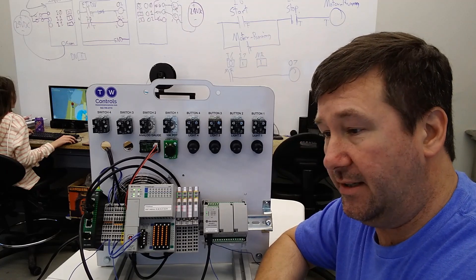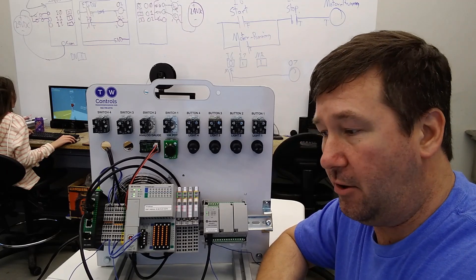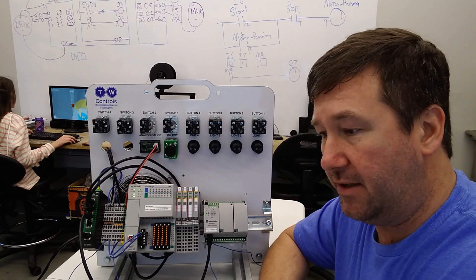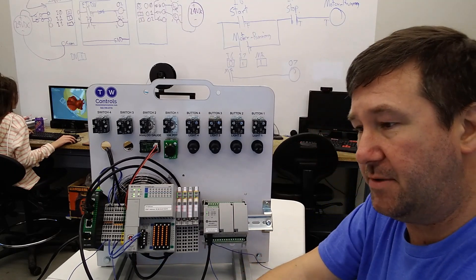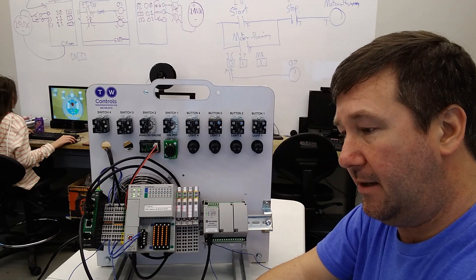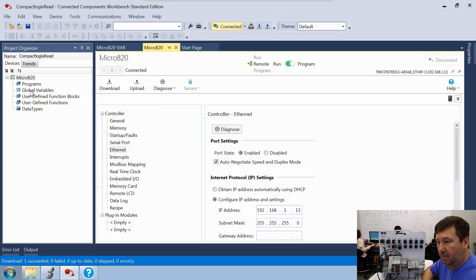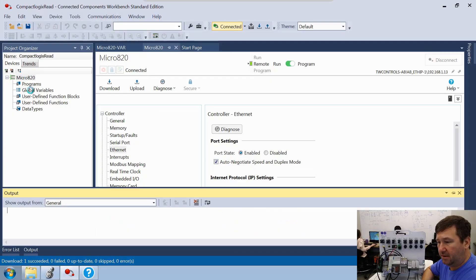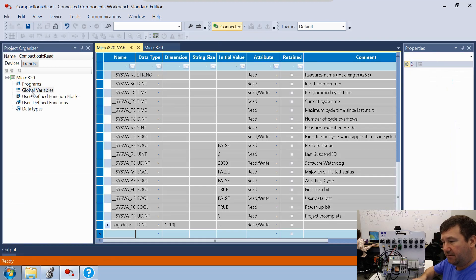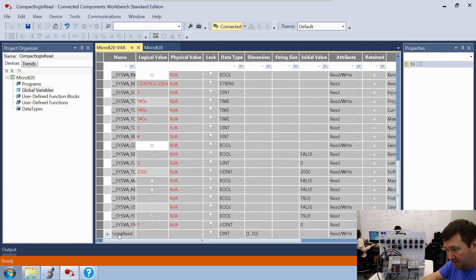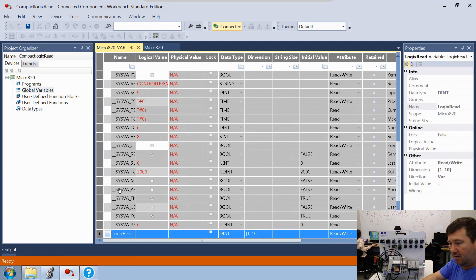Let's go ahead and download this. If you need any help downloading your program or configuring your ethernet or even a serial driver, look down in the description. We have videos on all of that. Once you're done, switch back to run mode and go ahead and pop open these global variables one more time so we can remember what that tag was. So our tag is called Logic Read.